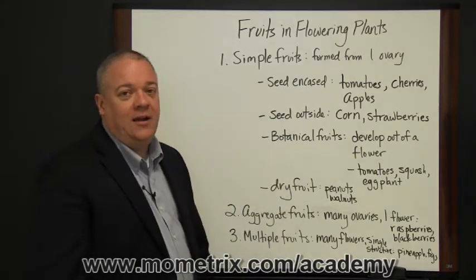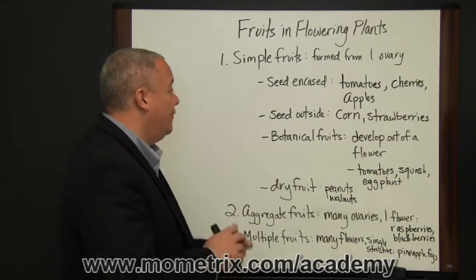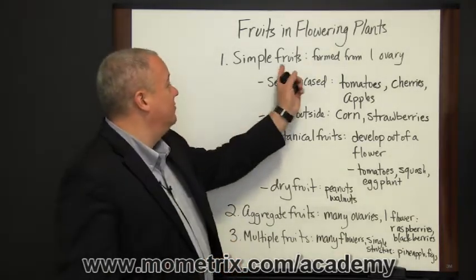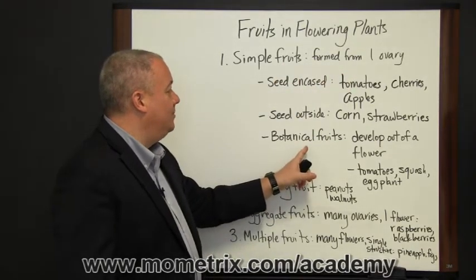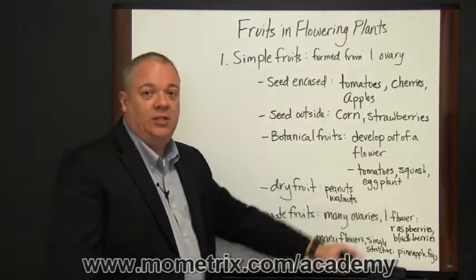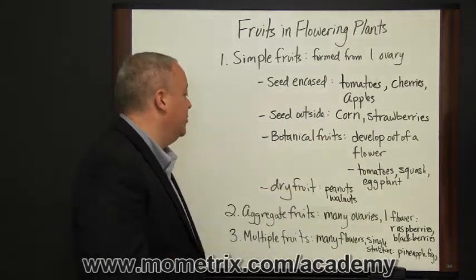The next category we want to look at under simple fruits is botanical fruits. These are fruits developed out of a flower. Once again, you've got a simple fruit, one ovary, a flower develops, and out of that flower comes the fruit. Things like tomatoes, squash, and eggplant would be representative samples of botanical fruits.